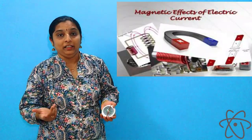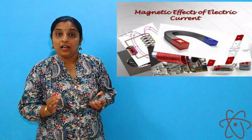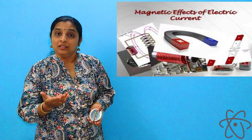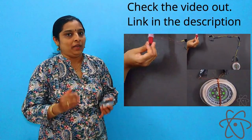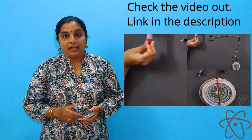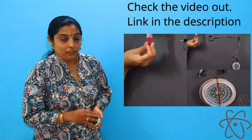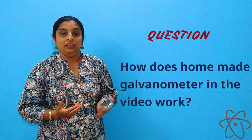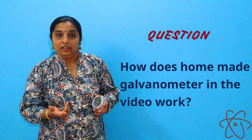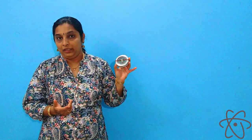Welcome to Vidnan Guru. This is the 7th video on magnetic effects of electric current of Class 10th CBSE physics. In the last video we understood about electromagnetic induction. Before we move on, what was the question I asked in the last video? I asked how the homemade galvanometer we used in that video was working as a galvanometer.